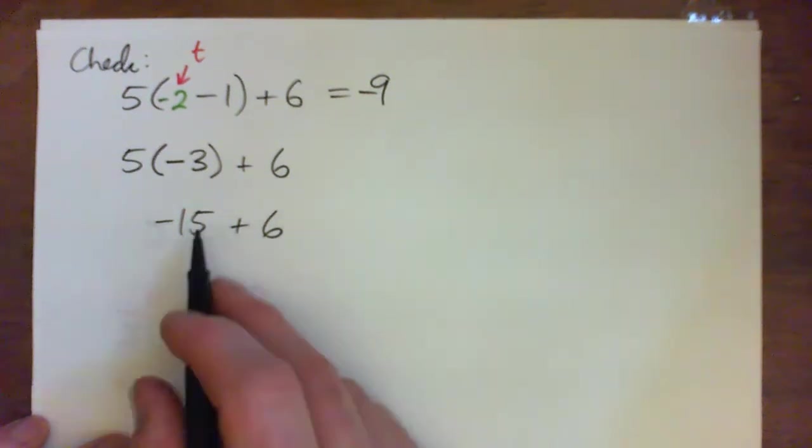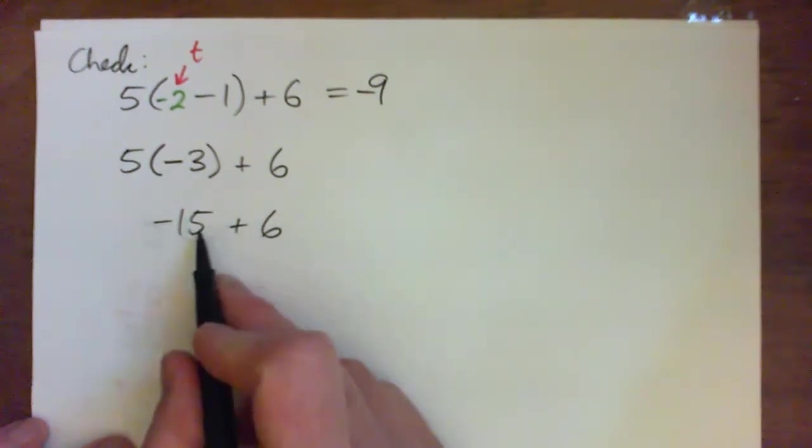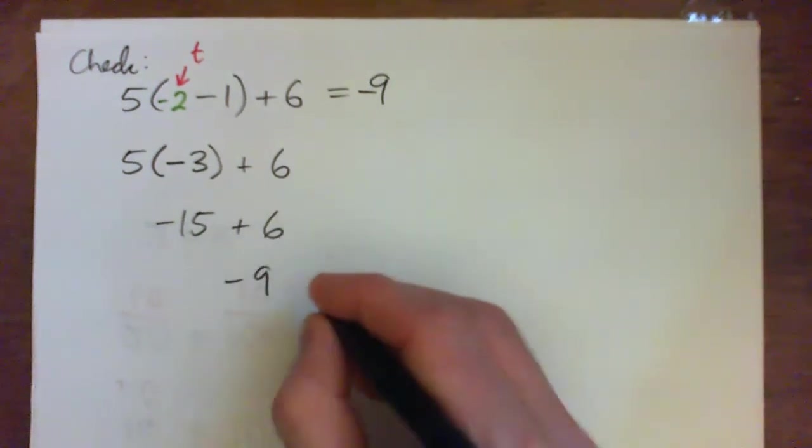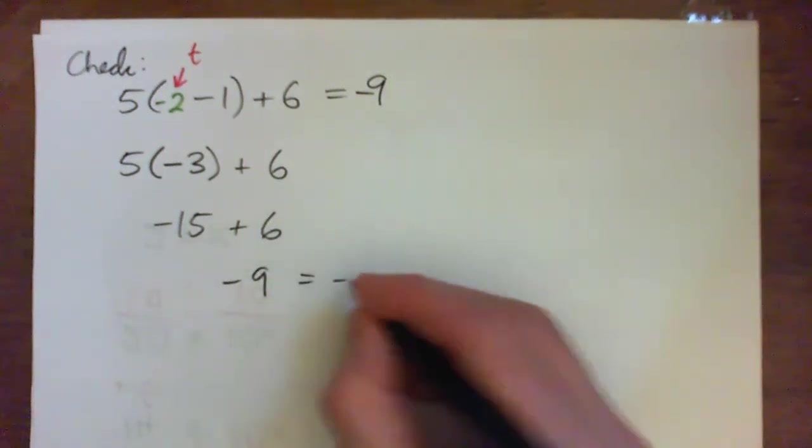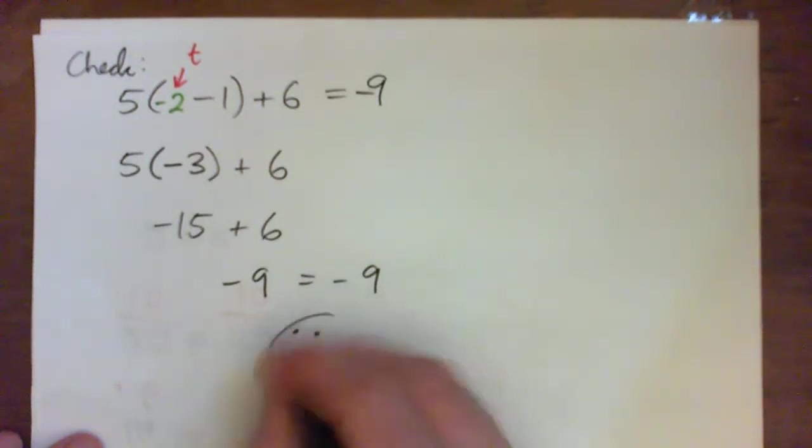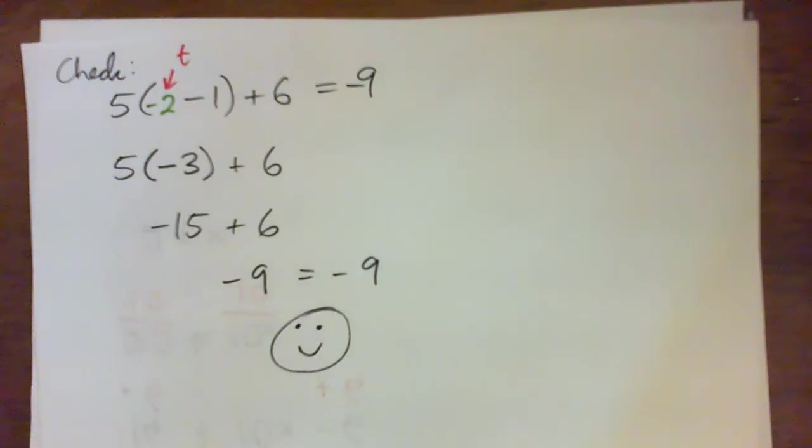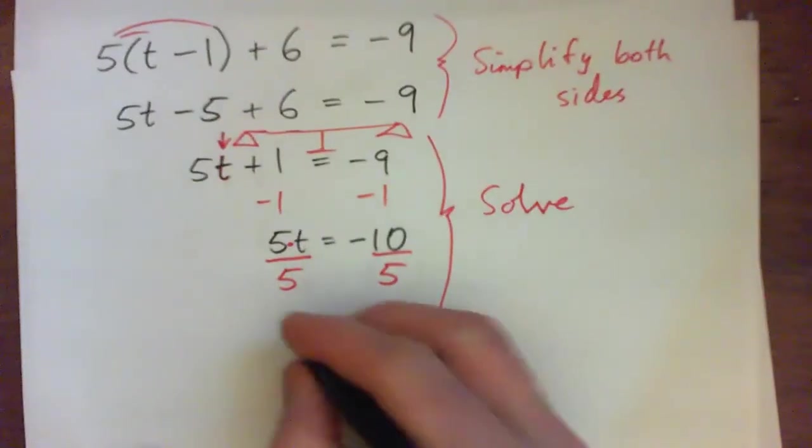Or plus 6, sorry, negative 15 plus 6. 15 bad guys plus 6 good guys is 9 bad guys, 9 negatives. So we have negative 9 equals negative 9. So we end up with the same thing on both sides of the equation. So we have solved the equation. t equals negative 2 is correct.